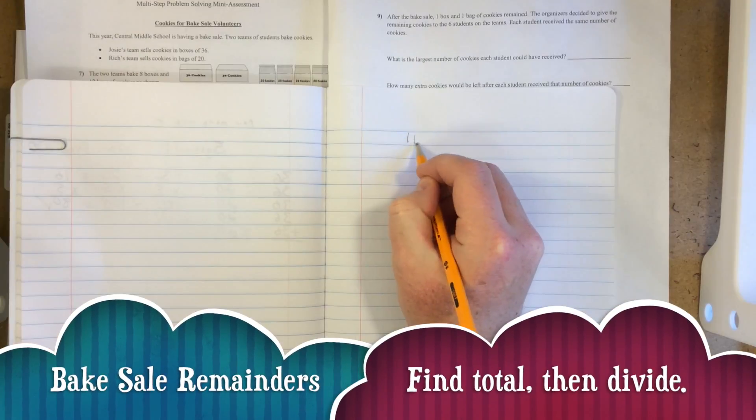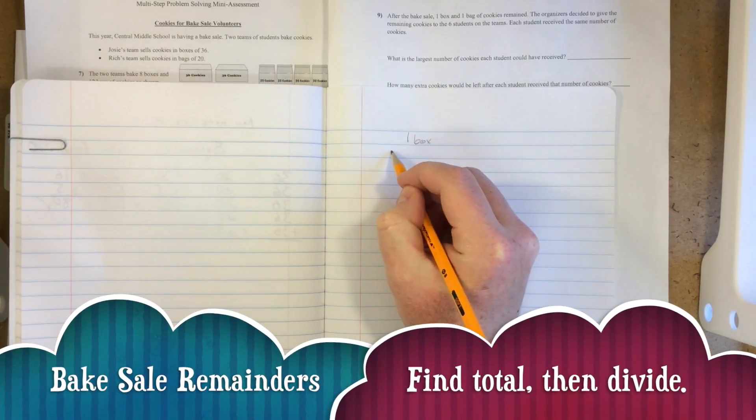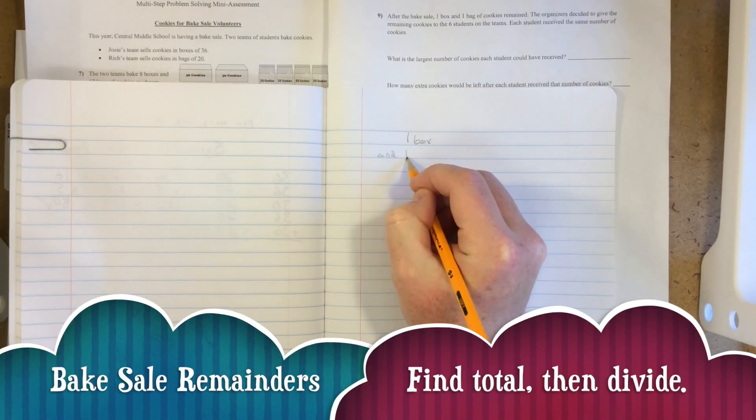One box and one bag remain, so we need to figure out the total number of cookies in there and then divide them among the six students.